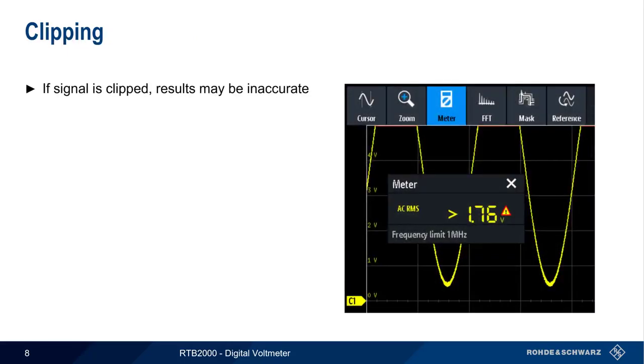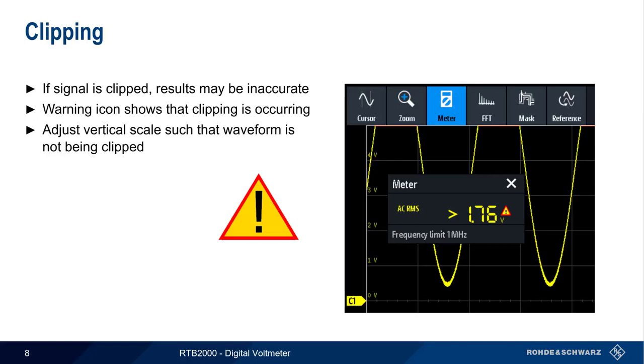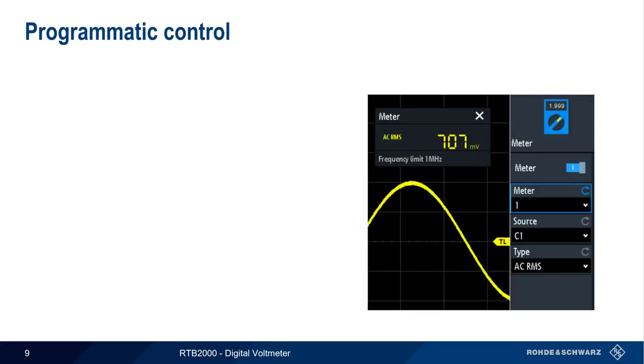One important thing to remember is that if the signal is being clipped—that is, if some portion of the waveform extends beyond the limits of the display—the DVM measurement results may be inaccurate. When this occurs, the RTB will display a small warning icon next to the measurement. In this case, the vertical scaling of the oscilloscope should be adjusted so that no part of the waveform is being clipped.